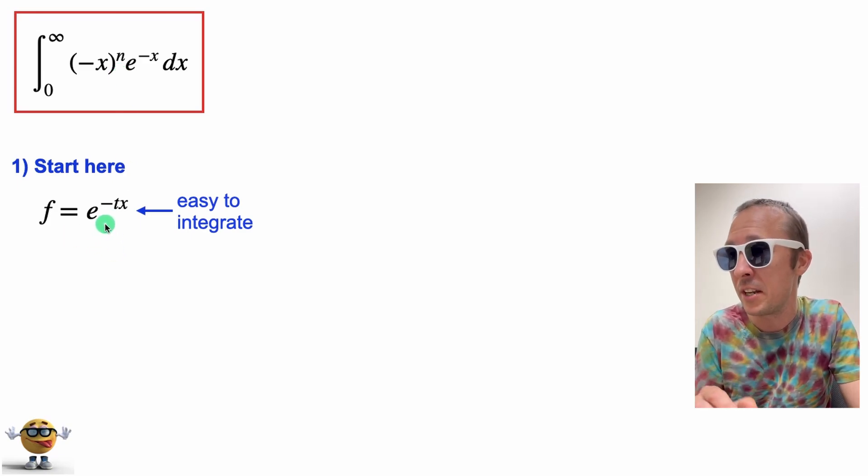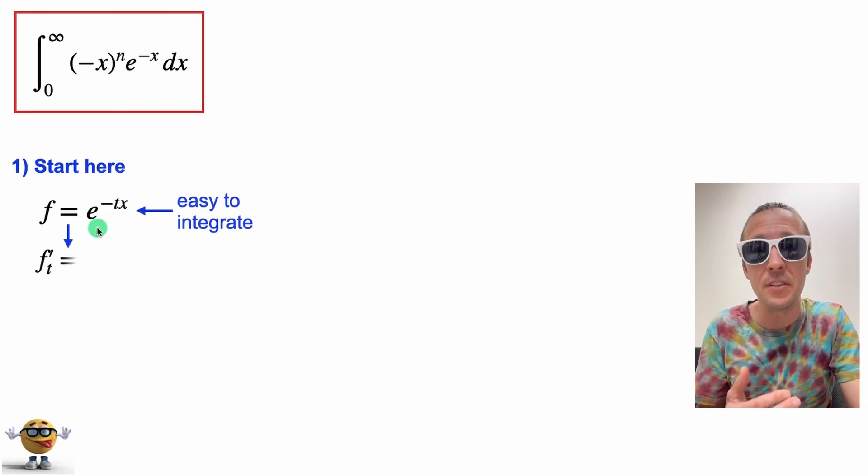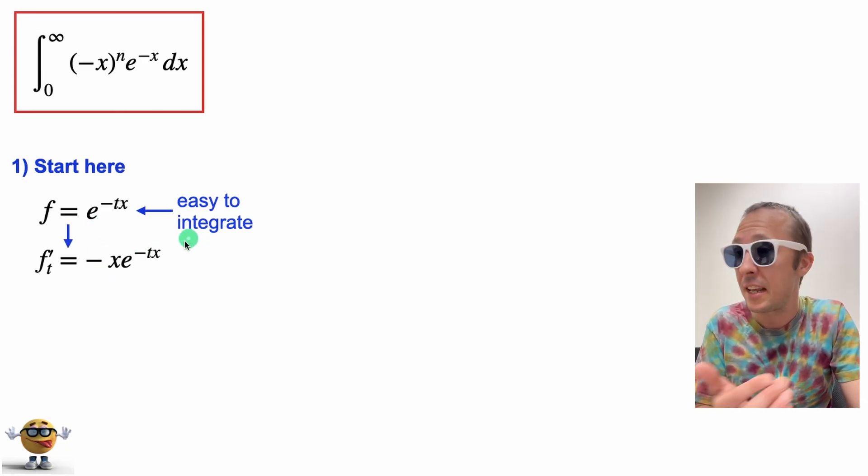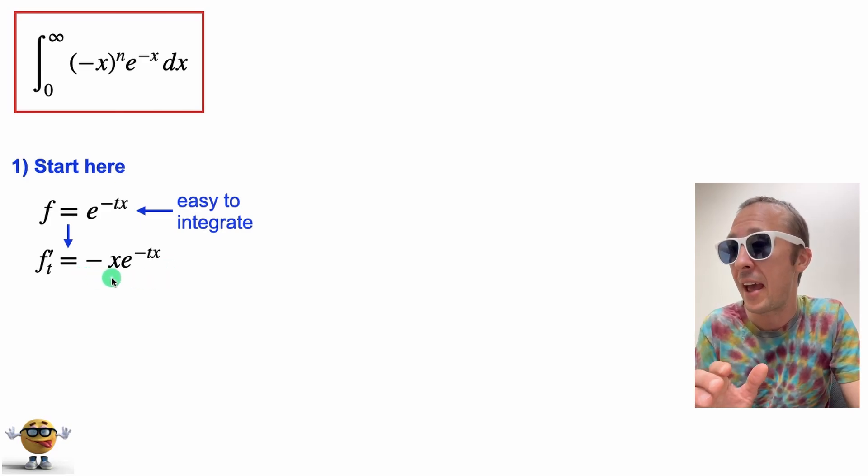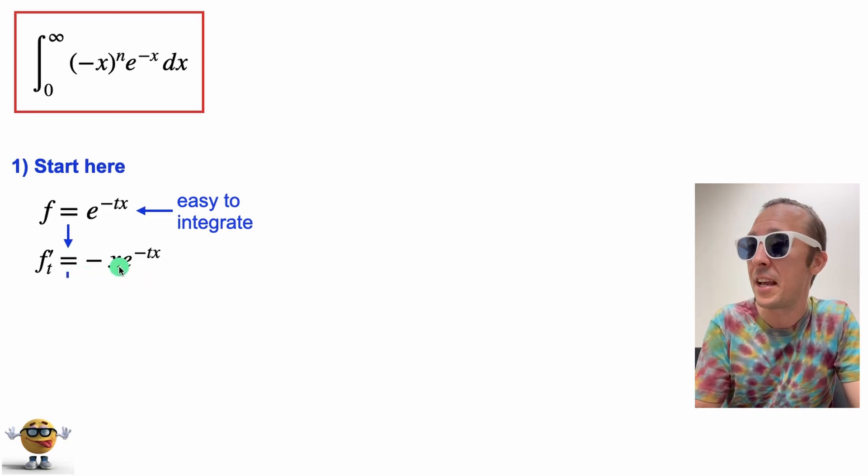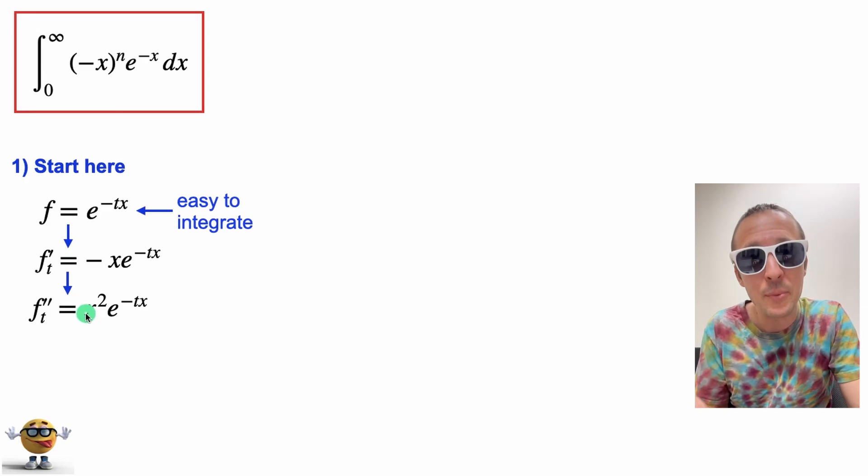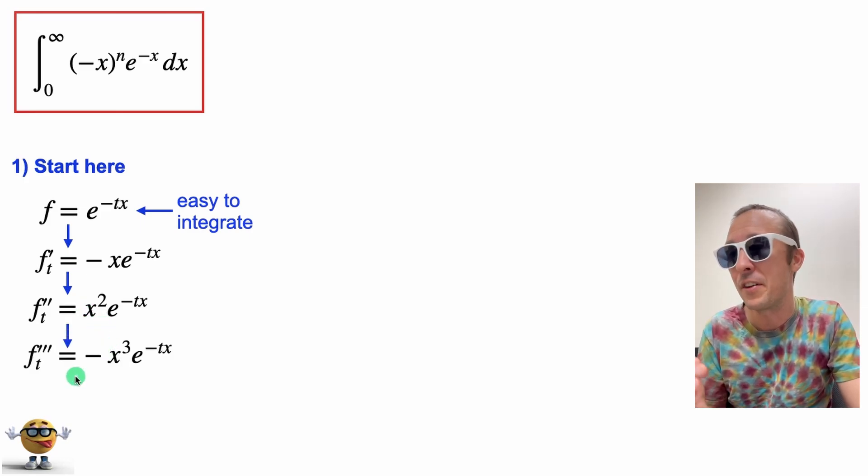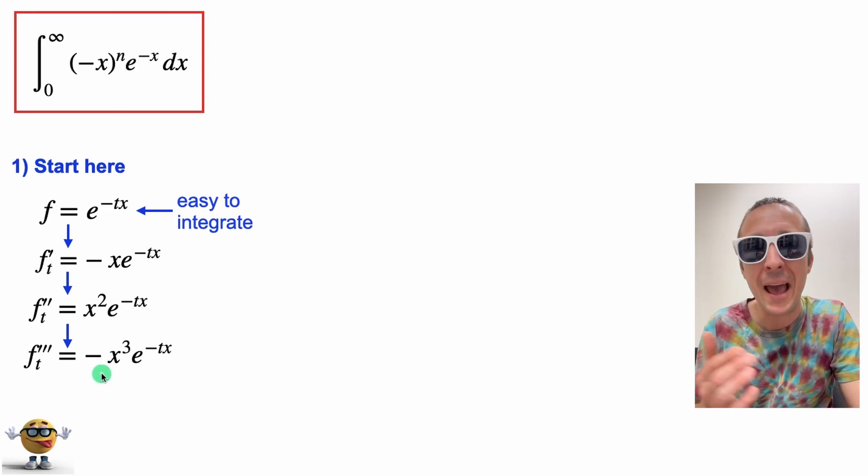Now this function, if we take the derivative of this function with respect to t, I know I said integrate, but we'll take the derivative first. We get negative x e^(-tx). If we take the derivative with respect to t again, we get x² times e^(-tx). If we take the derivative a third time, we can kind of see this pattern forming, negative x³ e^(-tx).